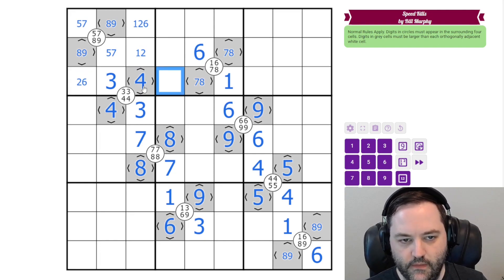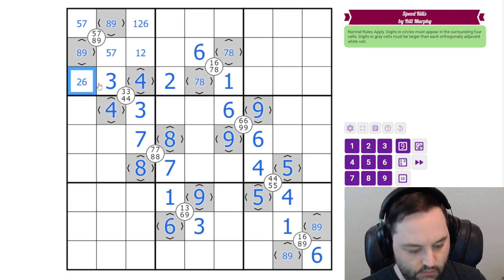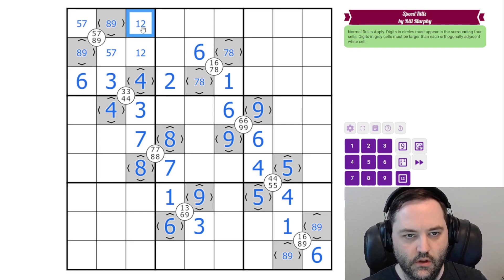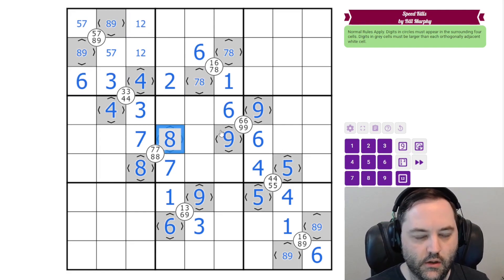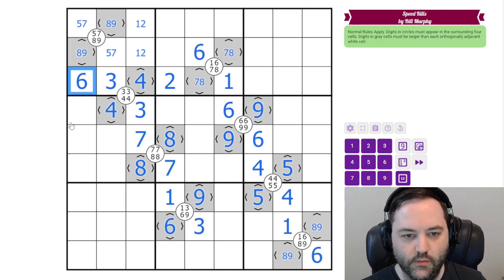In fact, the only digit that can go here, which is less than 4 is 2, because we already have 1 and 3 in the row. So that 2 is going to give us a 6. And we need a 1, 2 pair in the box. 8 or 9 is bigger than 6, so that doesn't tell us anything there.